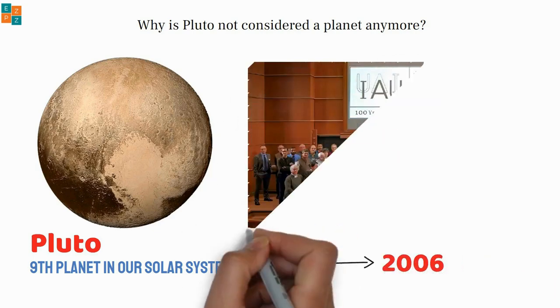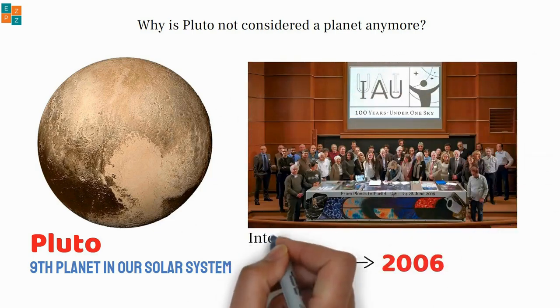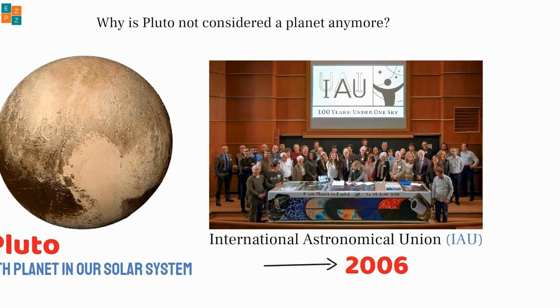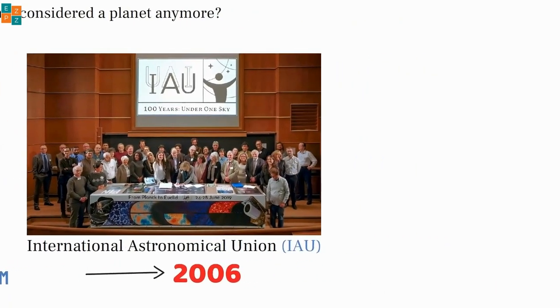The reason for this change lies in how we define a planet. According to the International Astronomical Union, a celestial body must meet three criteria to be considered a planet.